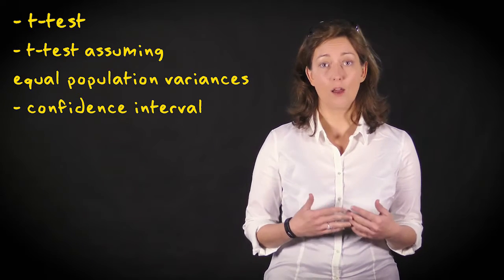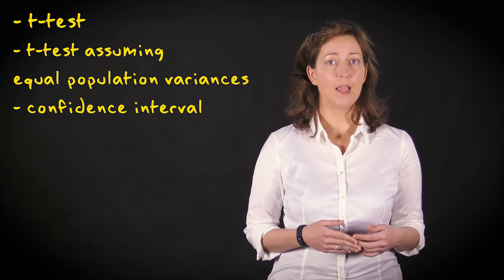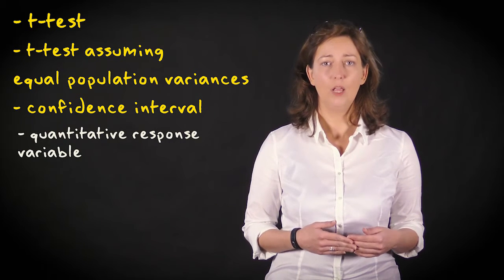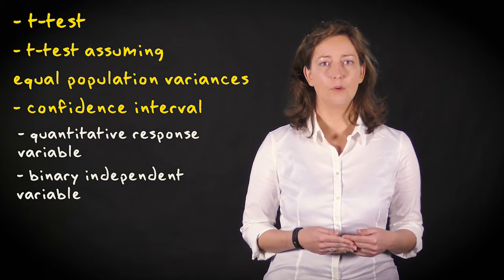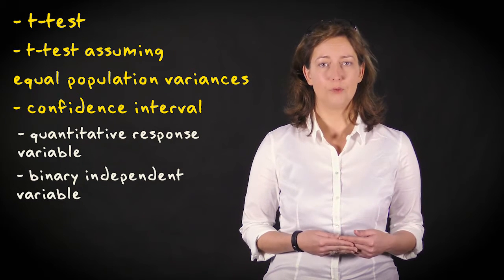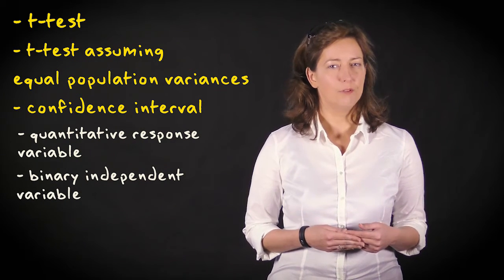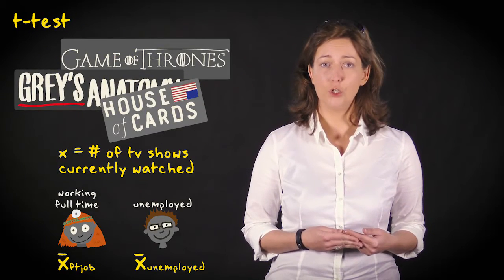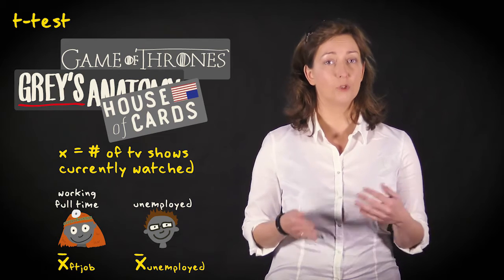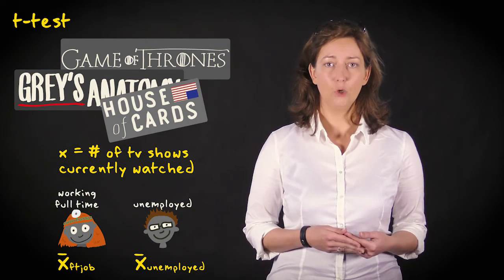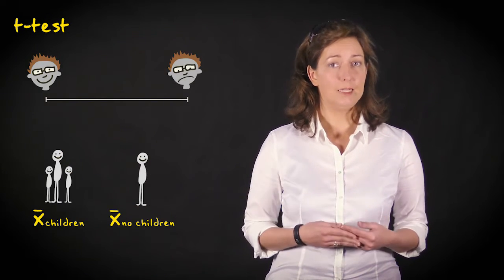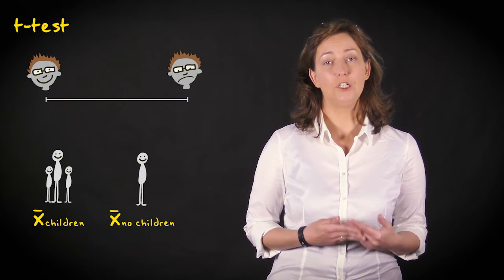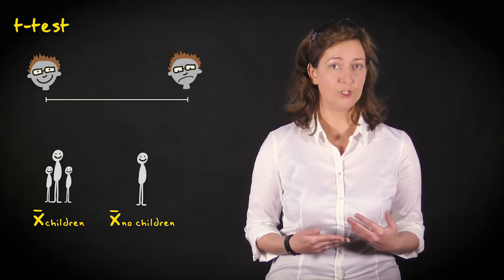We use a t-test, or confidence interval, for two independent means if we have a quantitative response variable and a binary independent variable that distinguishes two independent samples. An example of a research question is: does the average number of watched television shows differ between people with a full-time job and people who are unemployed? Or is the mean score on a happiness scale lower for people who have children versus people who don't have children?